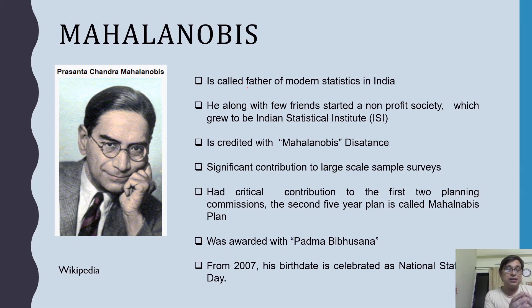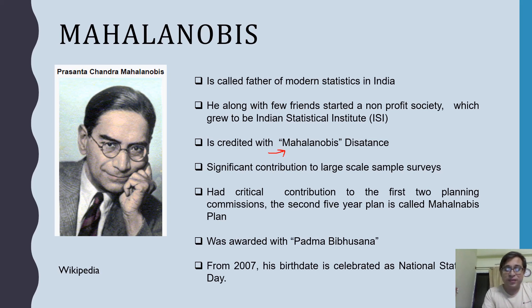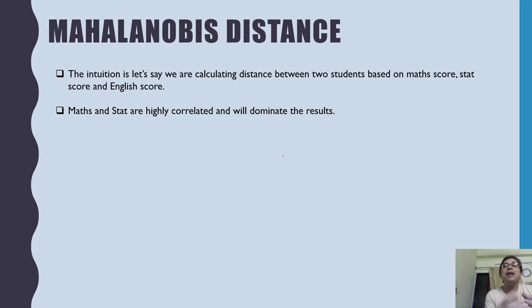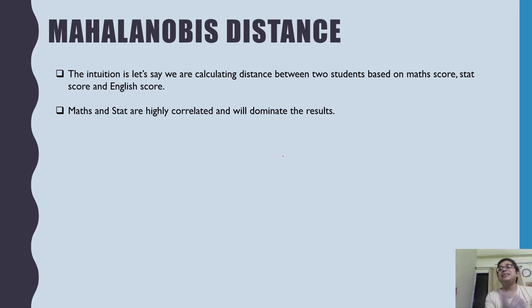His interests were quite varied. The Mahalanobis distance actually came about when he was doing a study in anthropology. Now let's understand the intuition behind this. Let's say we are calculating distance between two students based on math score, stats score, and English score. You can understand that maths and stats are highly correlated — you can think of maths and stats as belonging to numerical aptitude and English to linguistic capability. As a result, maths and stats will be highly correlated.